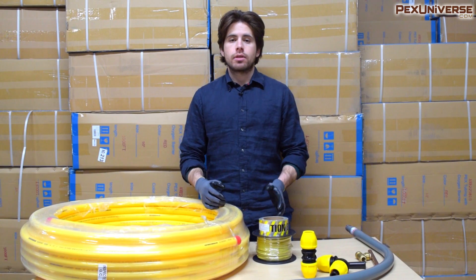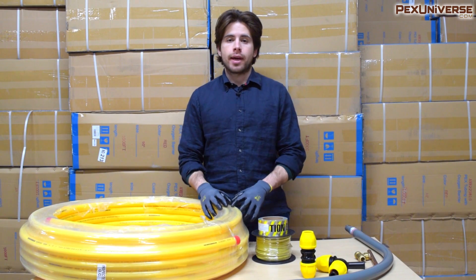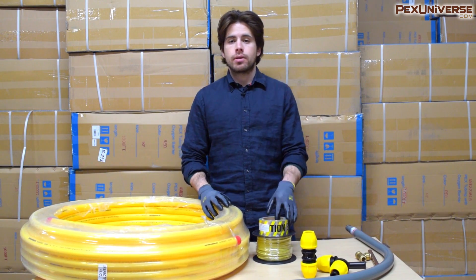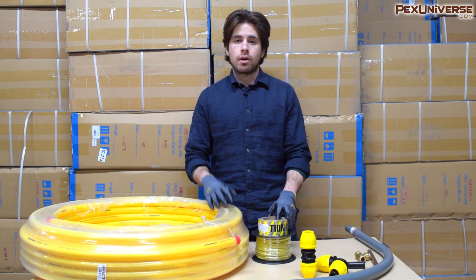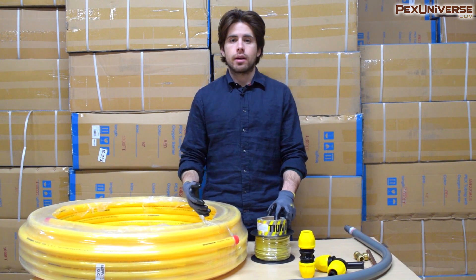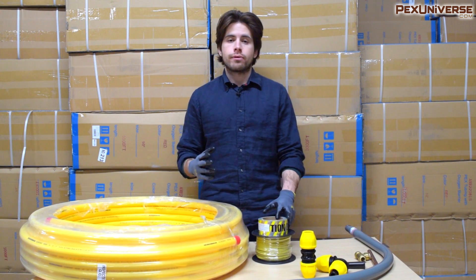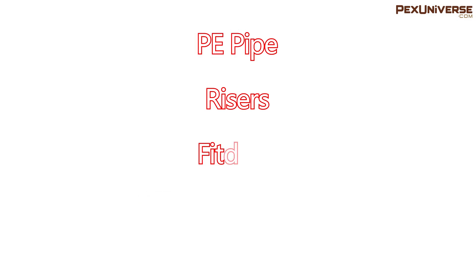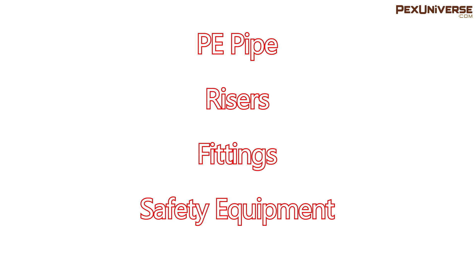In this video you're going to learn what you need to know about PE gas pipe, as well as the fittings and components that you need to purchase if you're looking to install gas pipe or replace an existing line. I'm going to break this down into four main categories: PE pipe, risers, fittings, and safety equipment that's required by code.